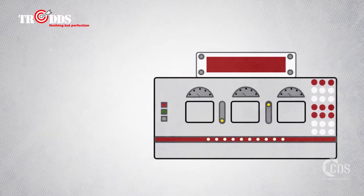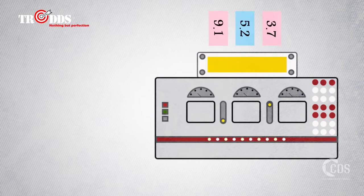For example, a football game has three possible outcomes. Team 1 wins, a draw, or Team 2 wins.